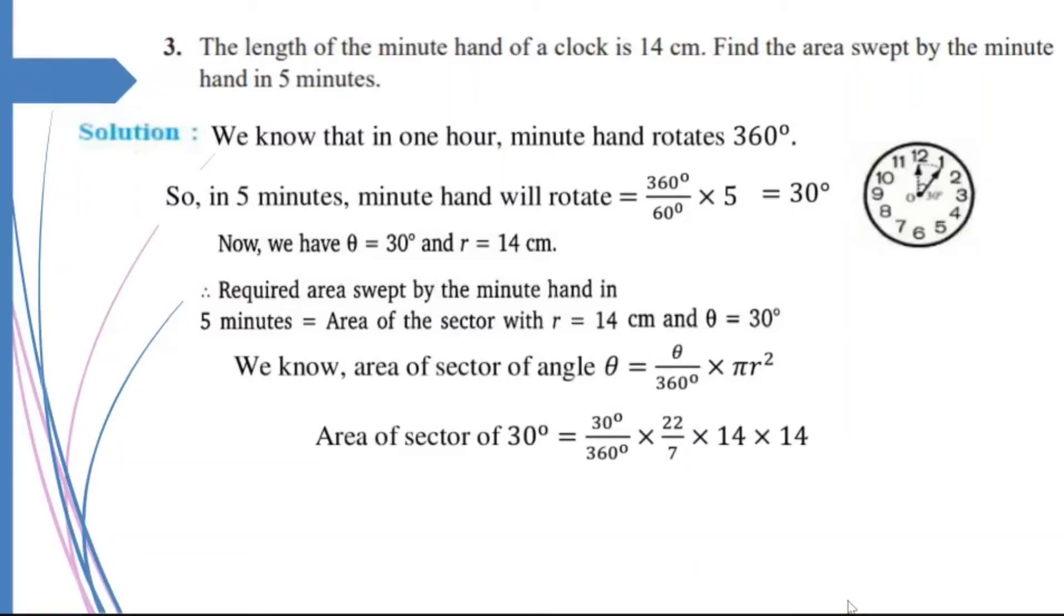I get area of the sector will be equal to 30 upon 360 into pi, which is 22 upon 7, into R, which was 14, into 14. This 30 and 360 cancels to give me 12. This 7 and 14 cancels to give me 2 here.